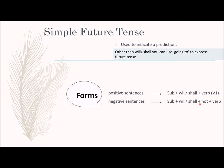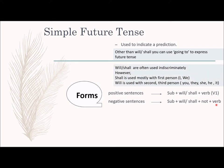Will or shall are often used interchangeably. The preference is: for first person singular 'I' and first person plural 'we', we prefer to use 'shall'. For second person 'you', third person 'he', 'she', 'it', and 'they', we use 'will'. Remember: 'will not' contracts to 'won't', and 'shall not' contracts to 'shan't'.